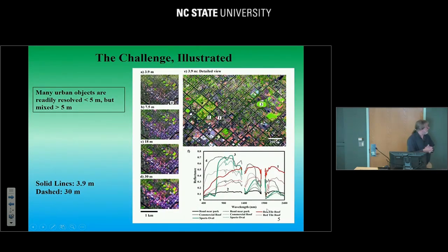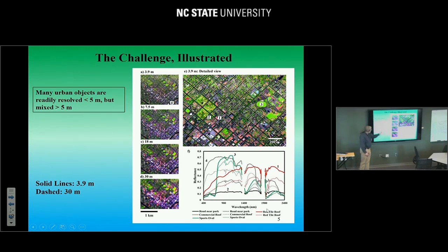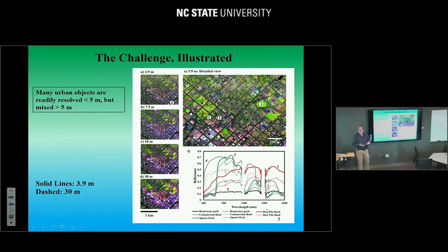We can get a sense of the challenge by looking at this figure showing Santa Barbara — four datasets, three real and one simulated. The top one is 3.9 meter resolution from an Avaris Next Gen scene. You can very clearly see the roads, different roof types, red brick, red tile roofs, and the spectra involved — red tile roof with classic hematite absorption, parks, roads. At 7.5 meters, most of these features are still pretty evident. At 18 meters, the Hisprey Airborne campaign resolution, you start having issues with some features no longer readily resolved.